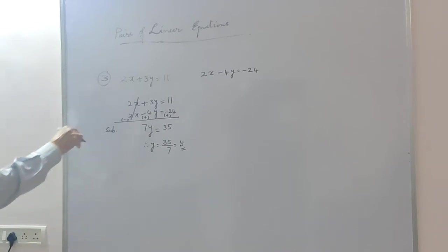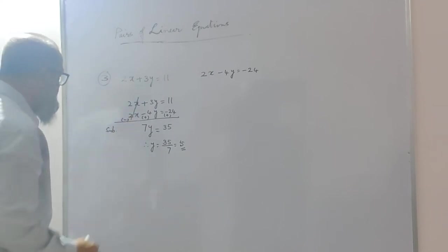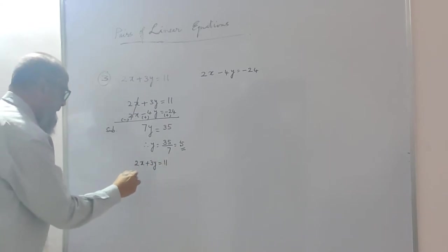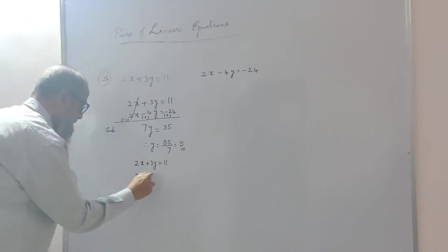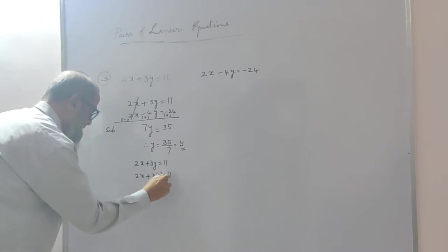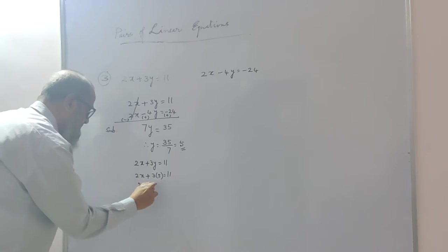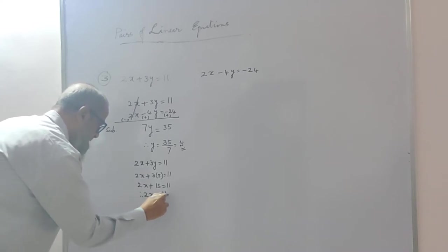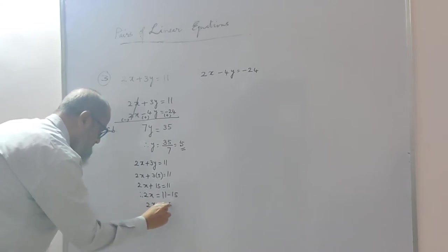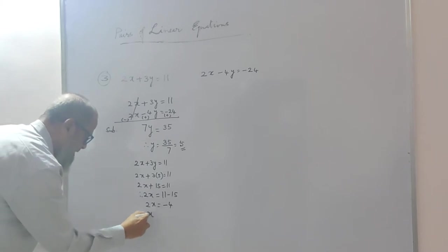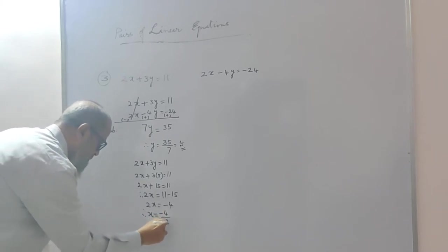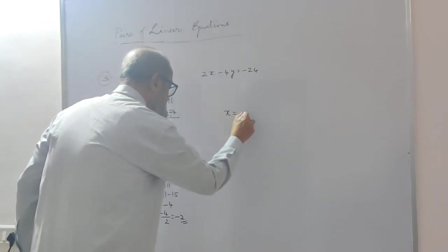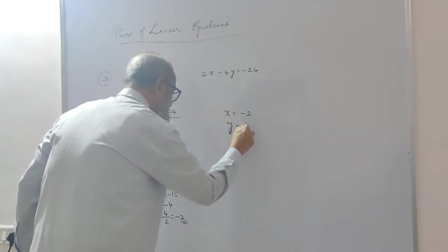By substituting the value of y in the first equation: 2x plus 3y is equal to 11; y is 5, so 2x plus 3 into 5 is 11. That gives 2x plus 15 is equal to 11. Therefore 2x is equal to 11 minus 15, that is minus 4. So x will be equal to minus 4 by 2, that is minus 2. The answer is x equals minus 2 and y equals 5.